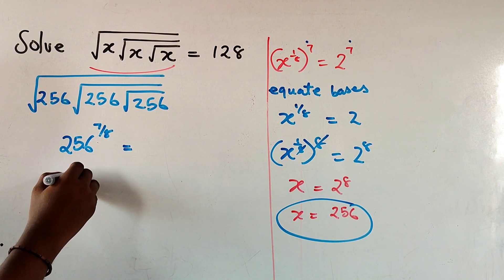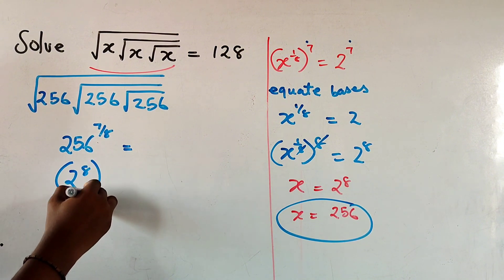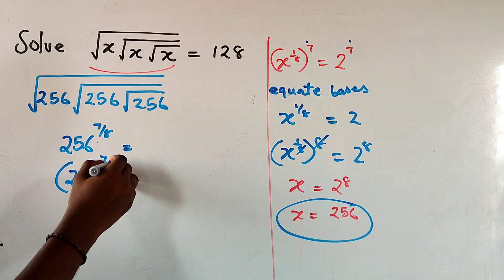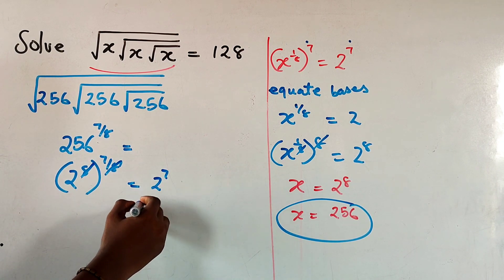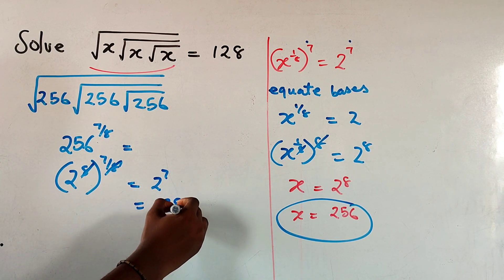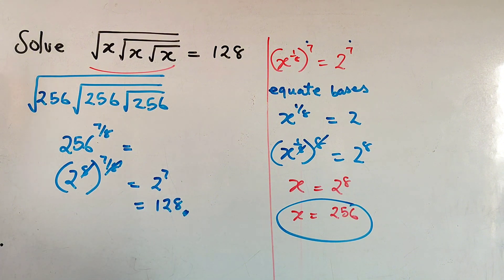Now, 256 is 2 to the power of 8. We already have that somewhere here. This is 7 over 8. So 8 cancels 8 and that gives you 2 to the power of 7, which we know to be 128. So that checks out.